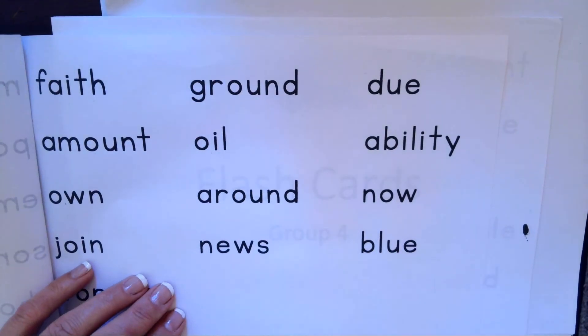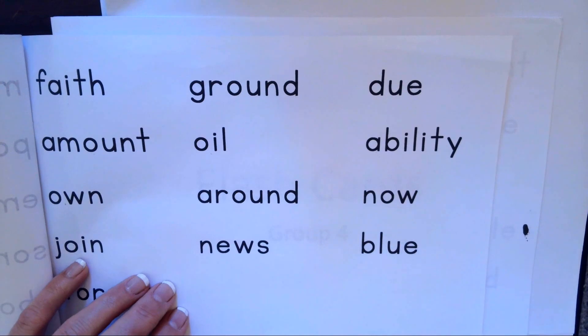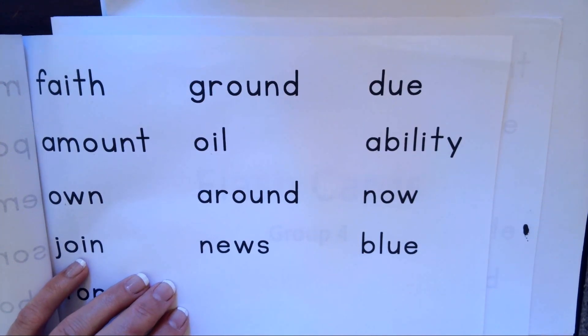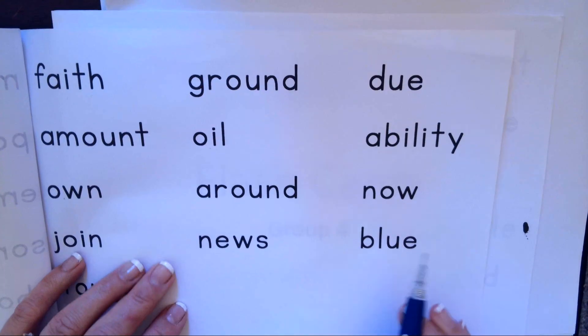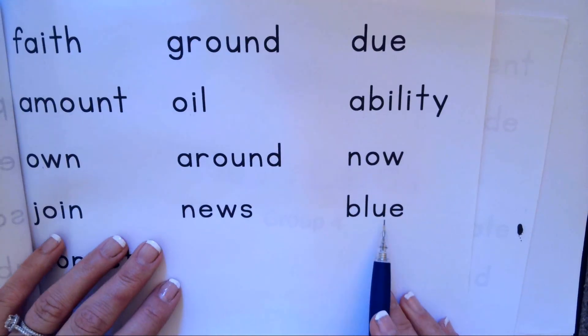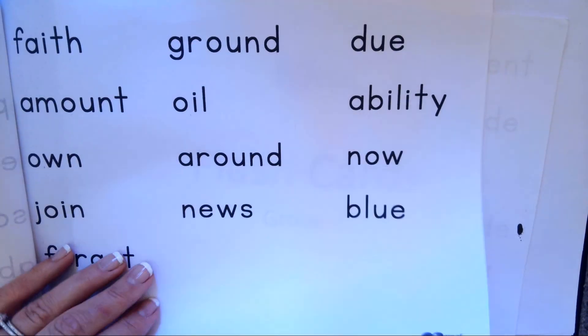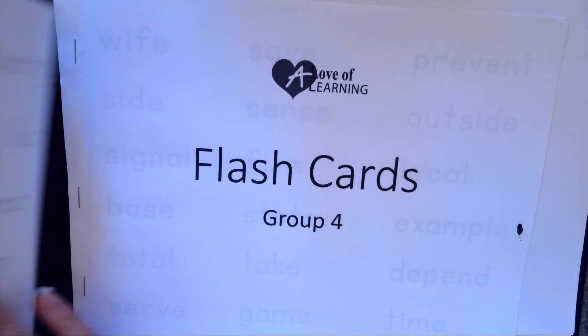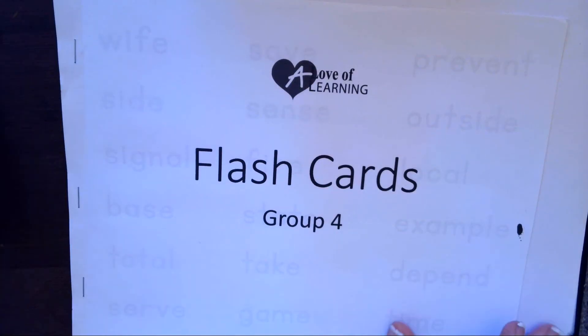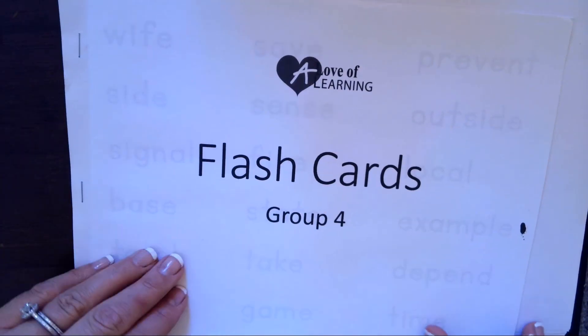O-W makes two sounds — it makes o or it makes ow. N-O-W or N-O? It's now. U-E makes o, B-L-U-E, blue.